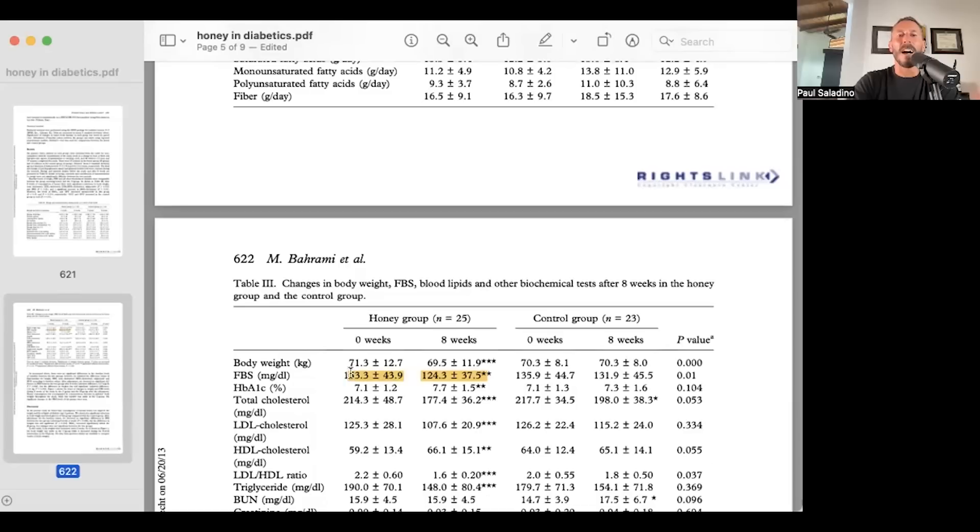The honey group reduced the fasting blood sugar from 153 milligrams per deciliter to 124. The standard deviations here are 43.9 and 37.5 respectively. But the honey group lowered their fasting blood sugar. That is the most important metric that this study did. I would have loved to have seen their fasting insulin. But if your fasting blood sugar is going down from 153 to 124, you're technically not even diabetic anymore. Obviously, a fasting blood sugar of 124 is way too high. But these people would now be considered pre-diabetic at eight weeks by giving them 175 grams of honey per day.